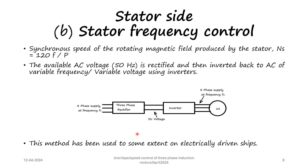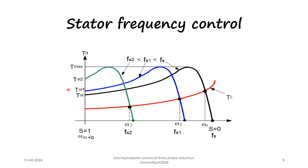This method is used to some extent on electrically driven ships. The torque-speed characteristics for stator frequency control are shown here. As the frequency is changed, there is a shift in the characteristics, and the point at which maximum torque occurs also changes — which is not the case with stator voltage control.